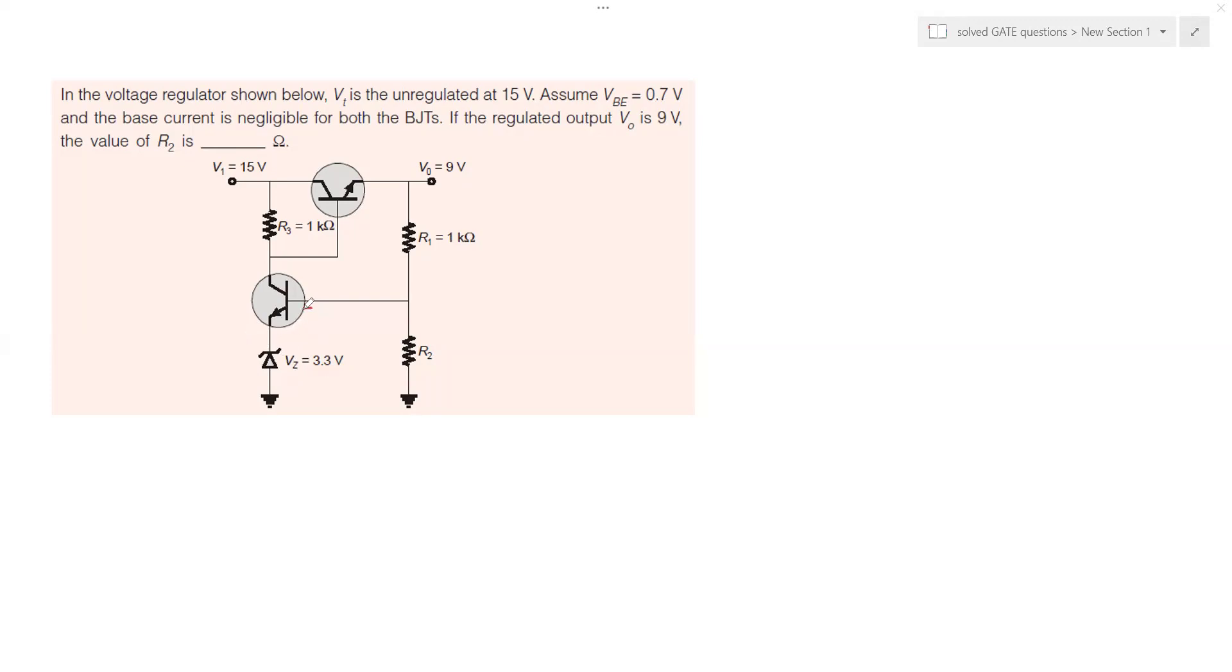This voltage plus this voltage Vbe that we just said which is 0.7 voltage will make up the total voltage across this resistor will be 4 volts. 3.3 volt plus 0.7 volt. Let me write here. You got the 3.3 volt. Here you got the Vbe which is 0.7 volts.